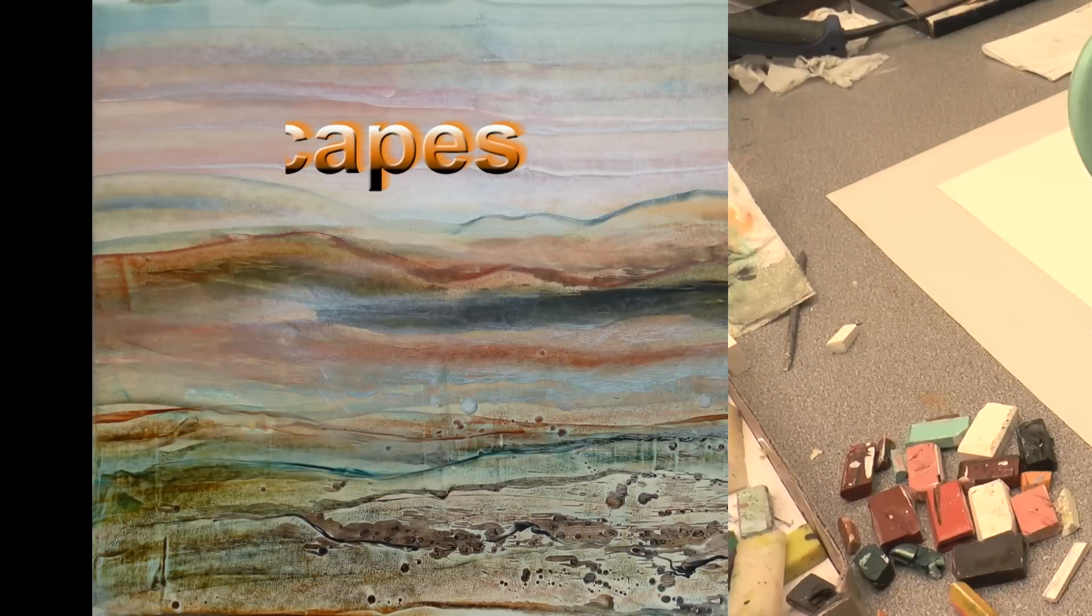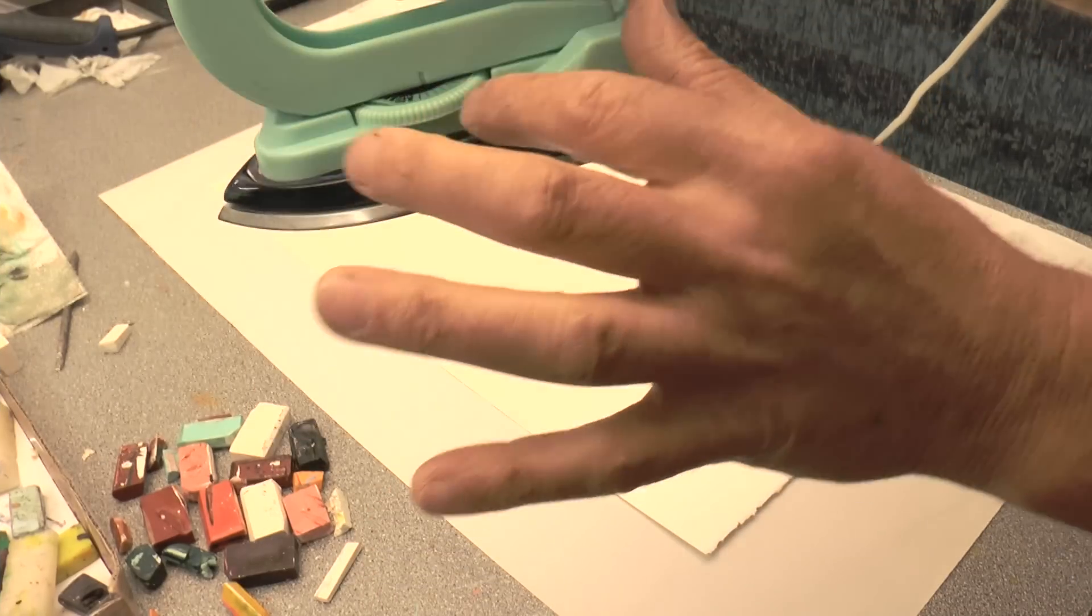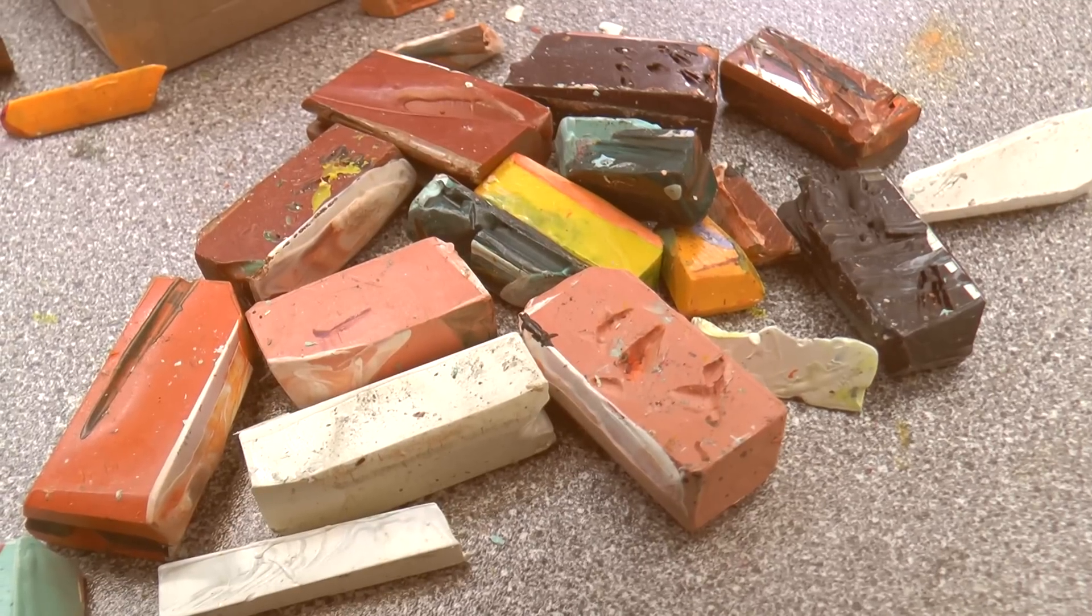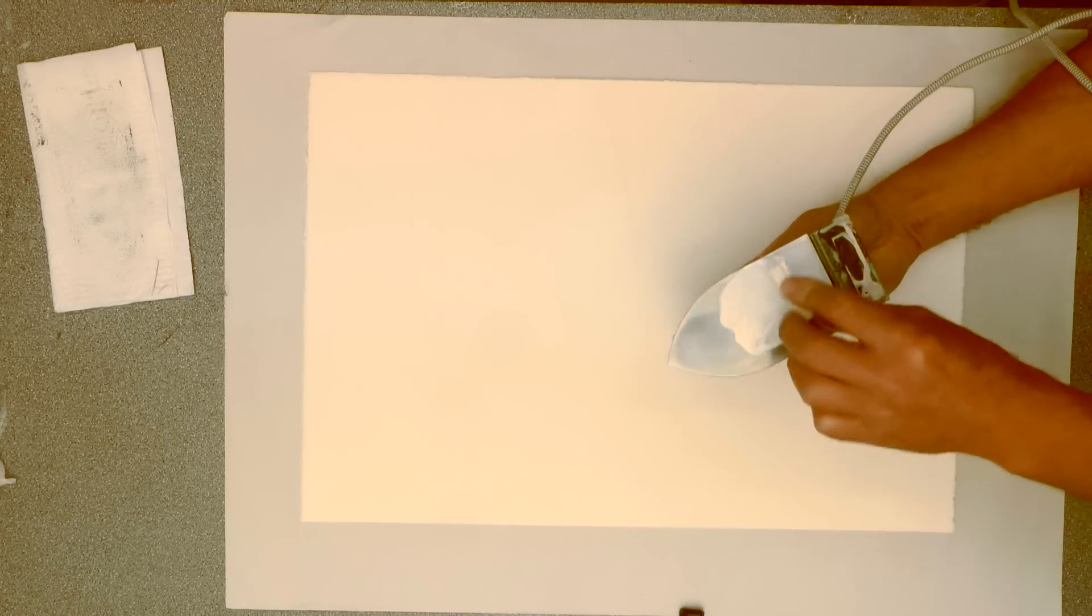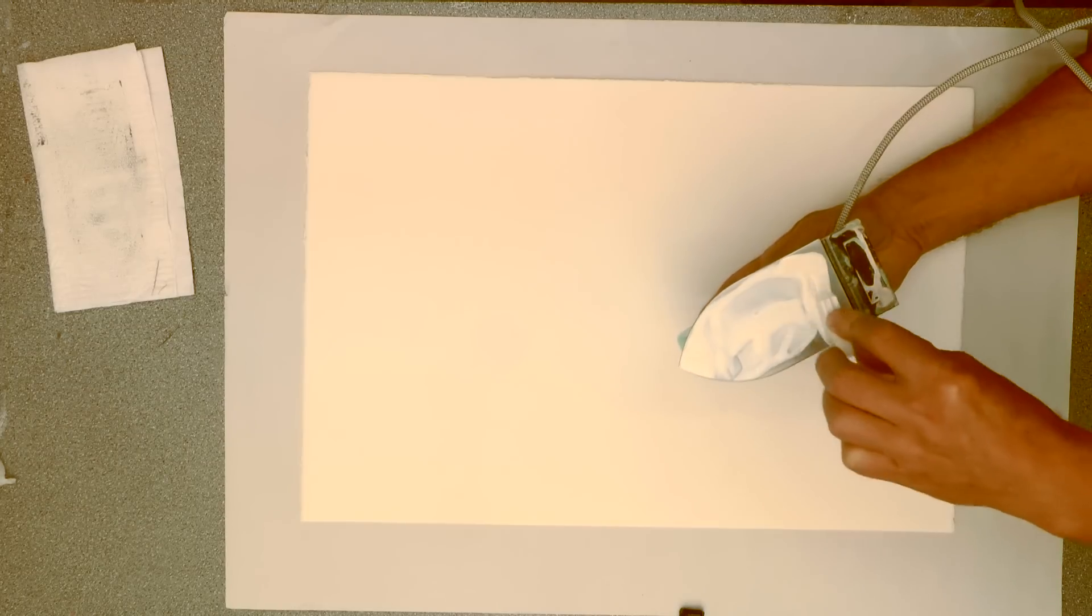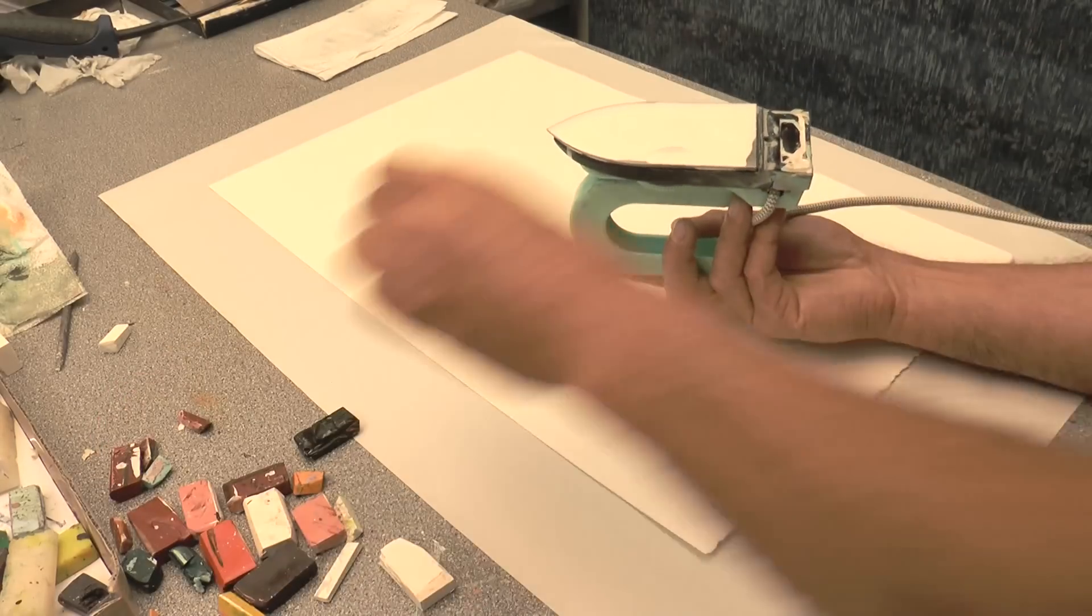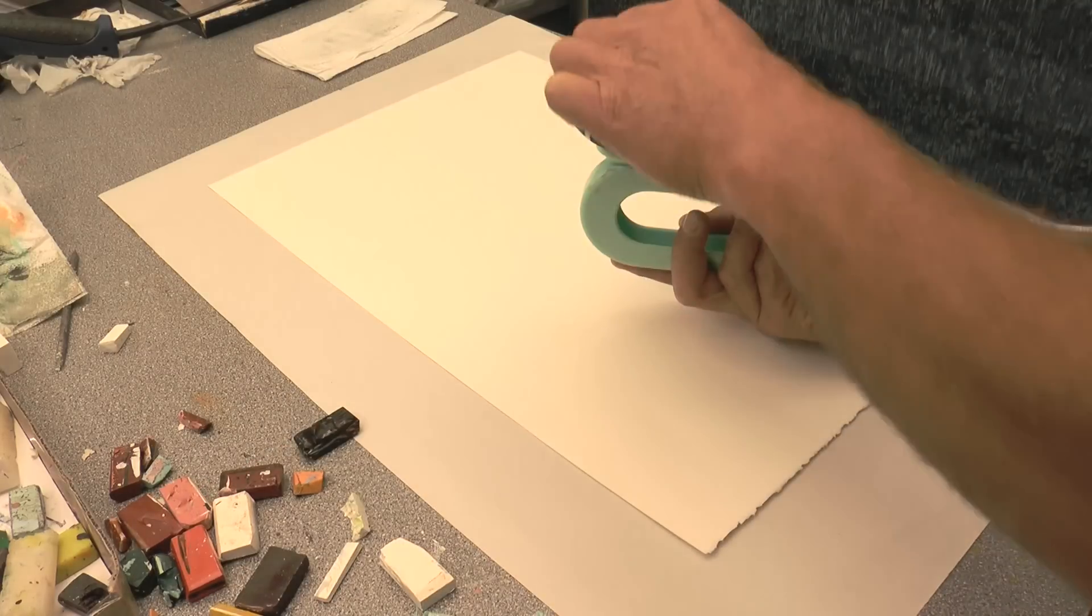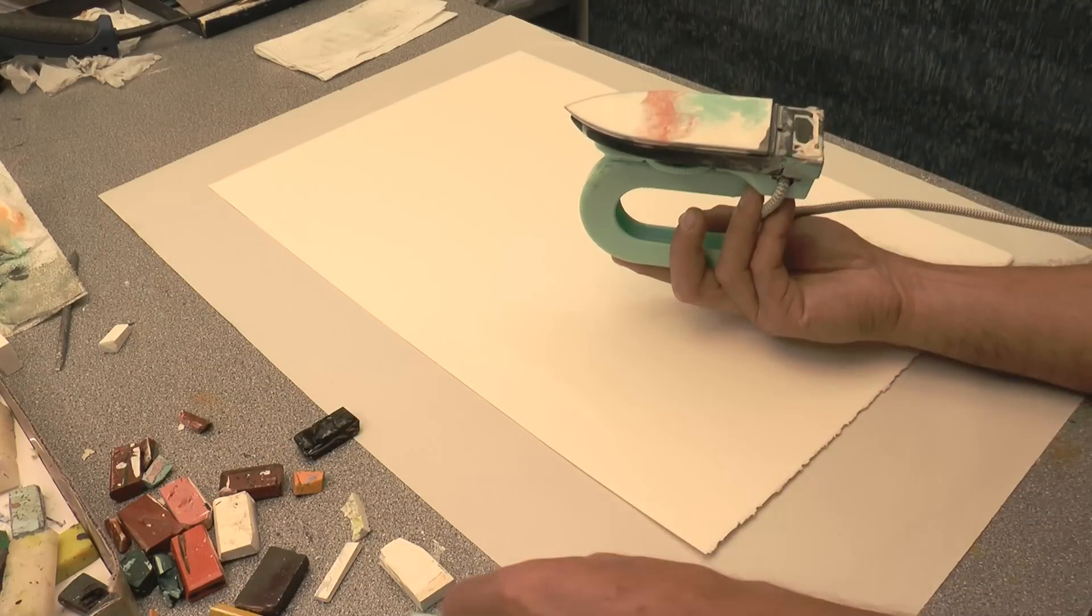So let's get started. Now the iron needs to be set a little bit hotter than normal. And these are the colors that I've chosen to reflect those photos. You can see the size of the watercolor paper I'm using. I'm loading the iron up. Remember that the wax is far more liquid than you might be used to, so you need to be quite careful here.